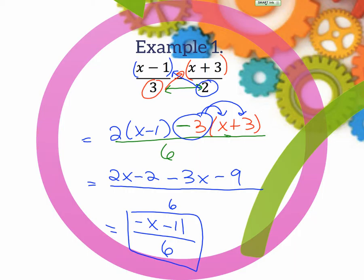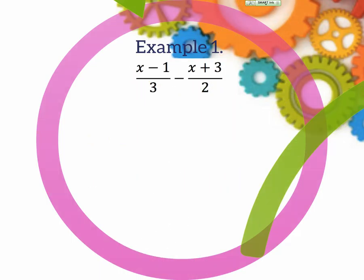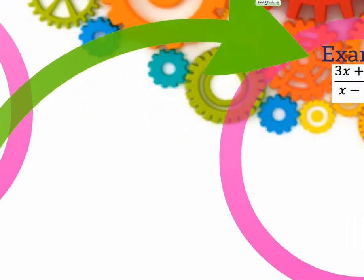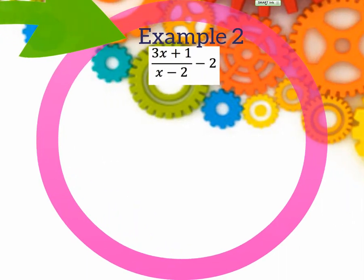We're going to look at one more example. Are there any questions? Anything I can make clear? Did you guys do this a lot in class? Yeah? Okay. So maybe I'm doing too much here, but hopefully it'll be nice and clear then. Alright. The next example is (3x plus 1) over (x minus 2) minus 2.